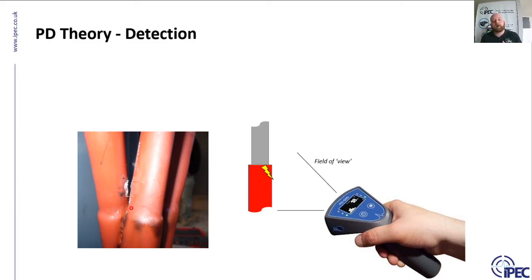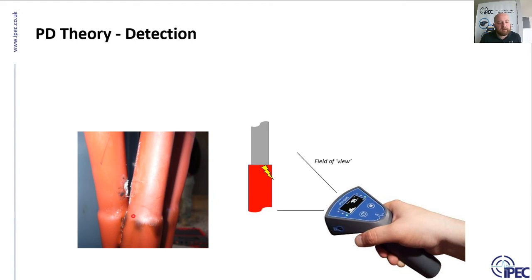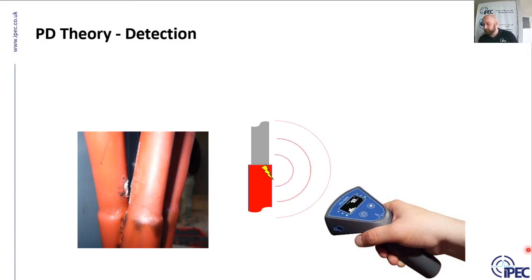An interesting example of partial discharge visible in one image shows three phases entering a termination where the insulation has been stripped back too early — the phases are too close together. You get discharge occurring between phases where the insulation ends. Visually this becomes apparent, but before it's visible the ultrasonic sensor would have been able to detect it.